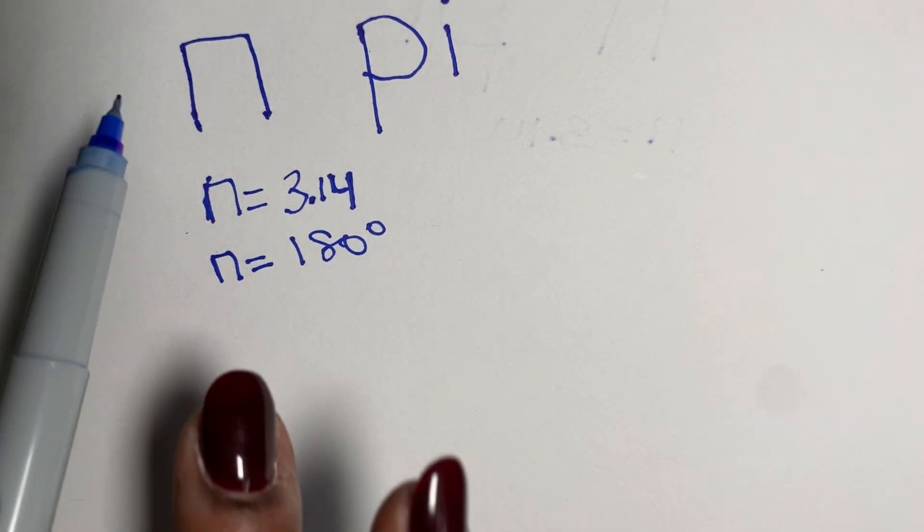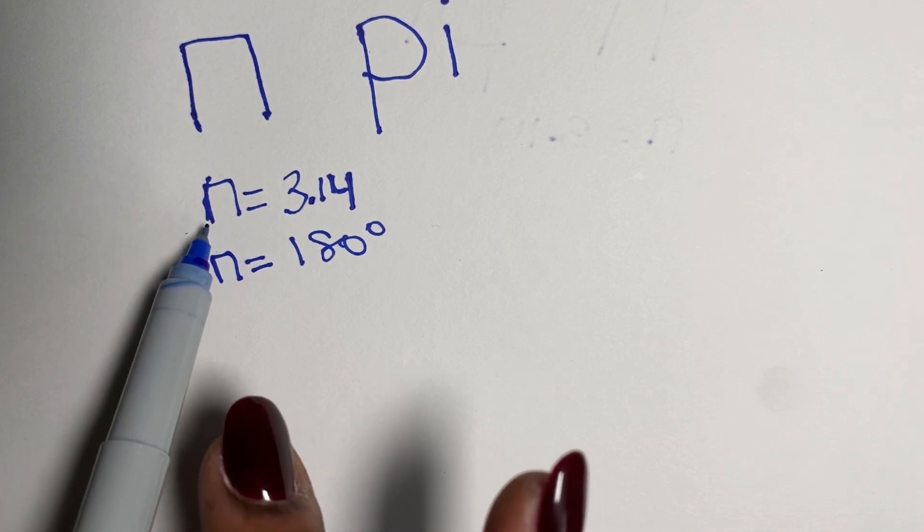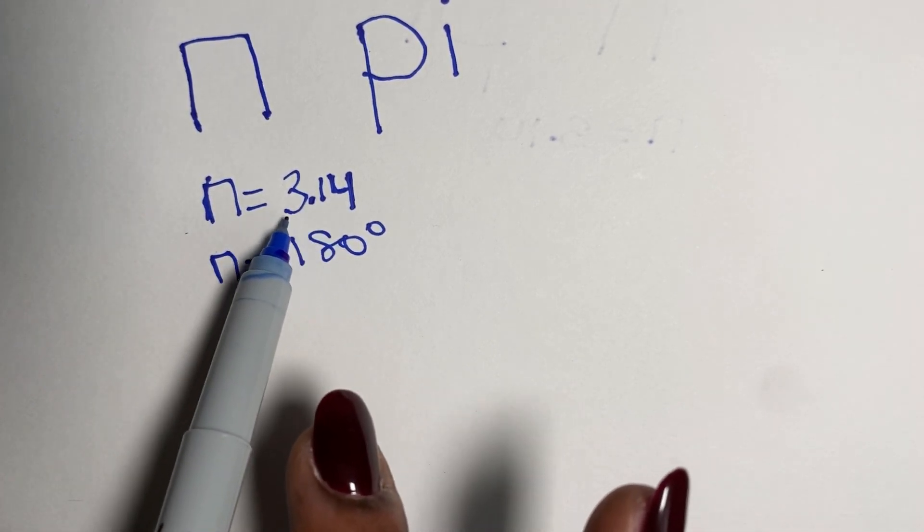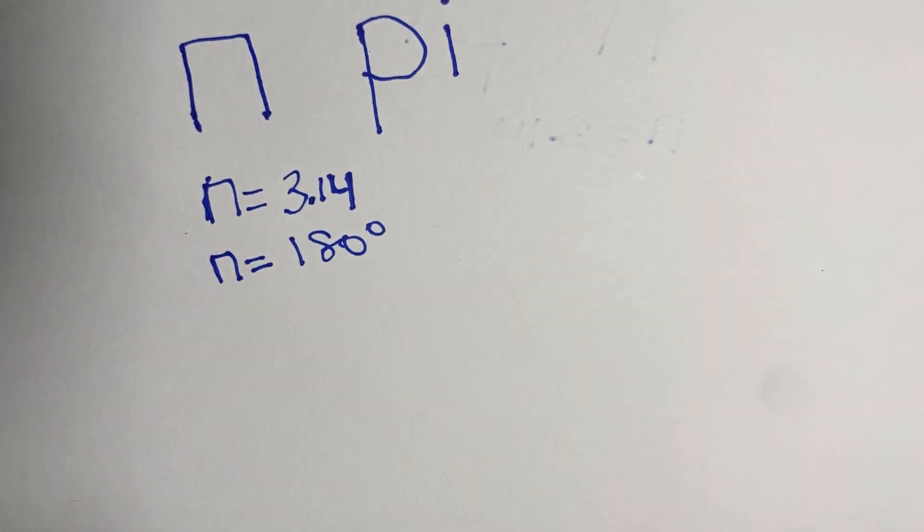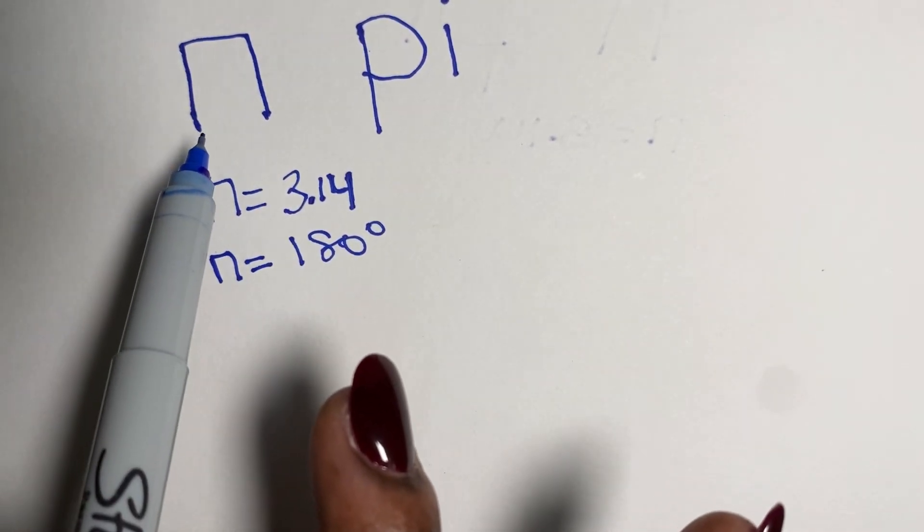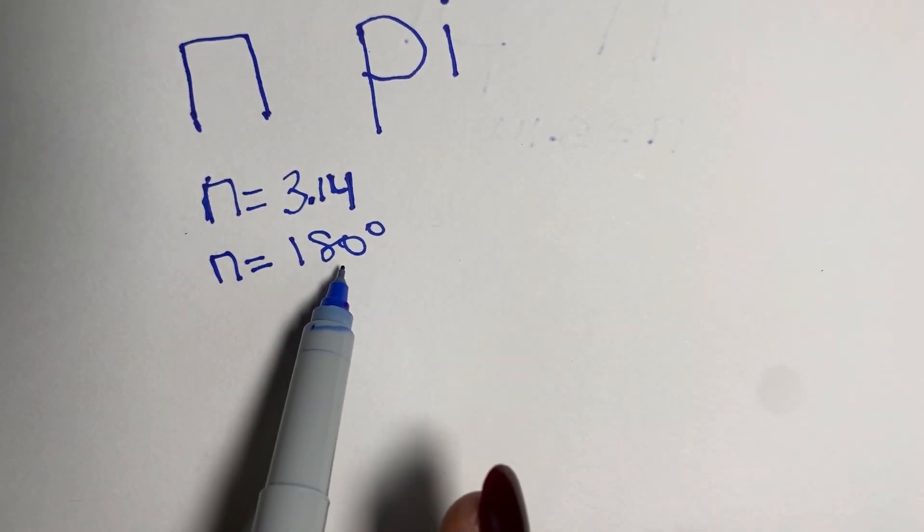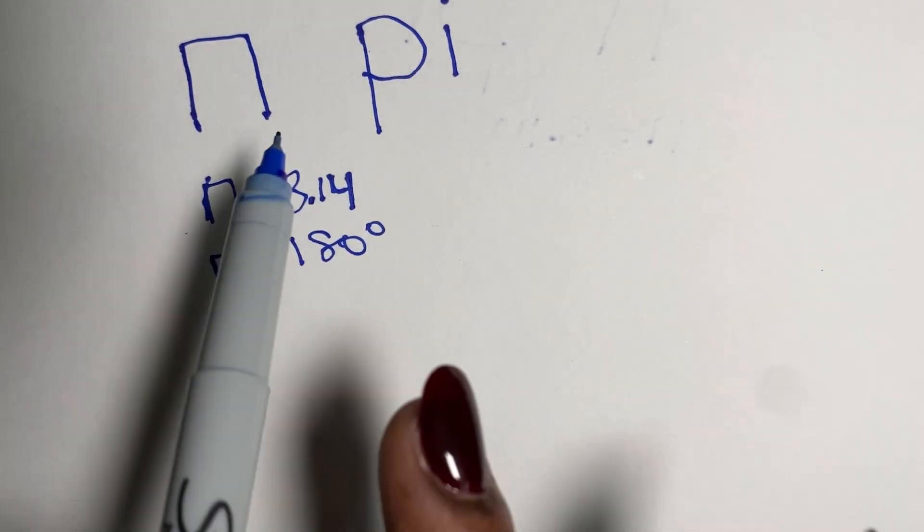Oftentimes when we think of pi, we say that pi is the equivalent of 3.14. But when we think of pi having an arc measure, this is an arc measure of 3.14. When we think of pi having an angle measure, it's also an angle measure of 180 degrees when we talk about pi radians.